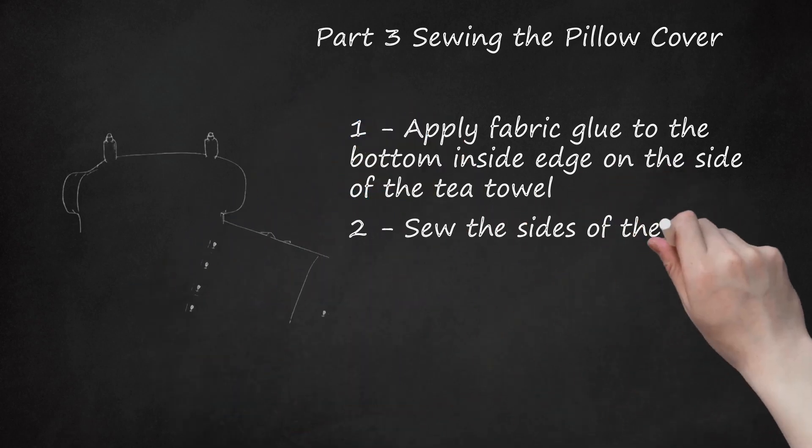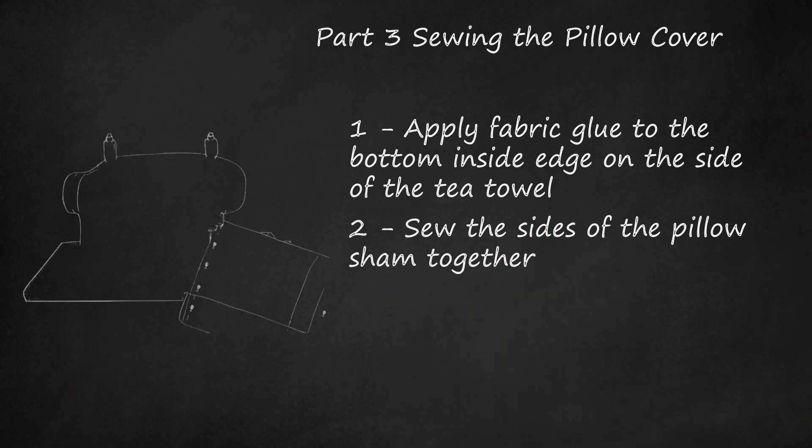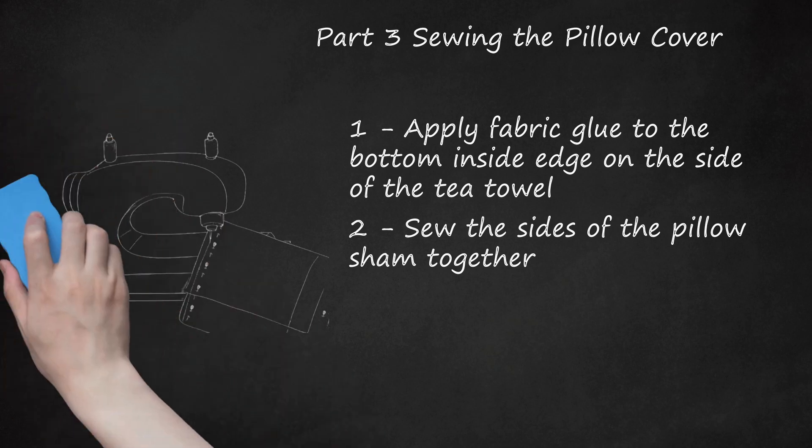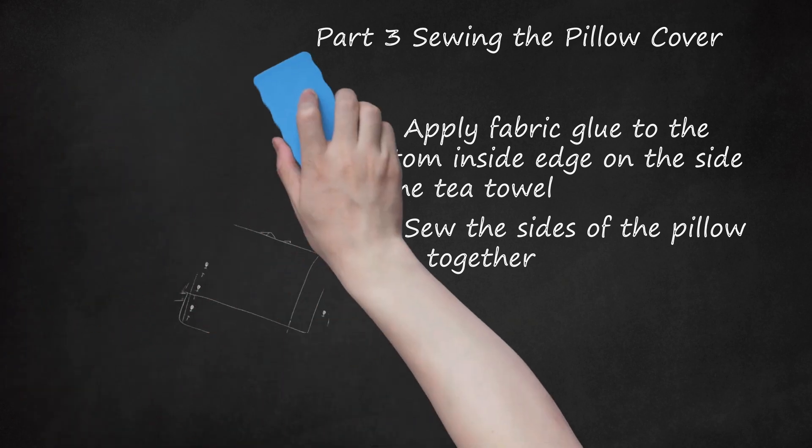Step 2: Sew the sides of the pillow sham together. Sew just inside where the top and bottom selvedge seams meet on the sides, or with approximately a 1.5-inch (0.6 centimeters) seam allowance. Backstitch on the top and bottom to ensure a sturdy stitch.